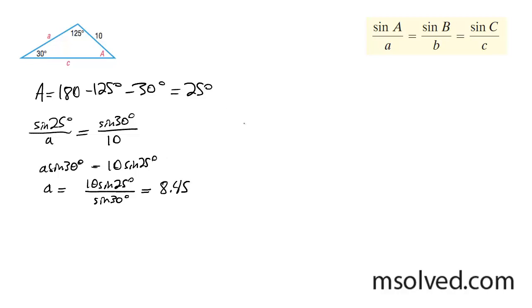Now I want to find side B, so that's going to be sine of 125 over C is equal to, I'll just do sine of 30 again, over 10.